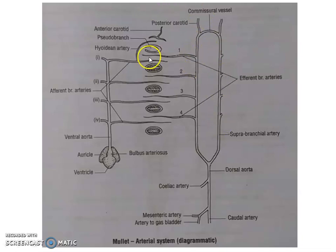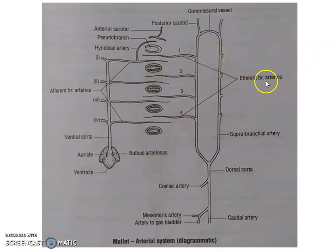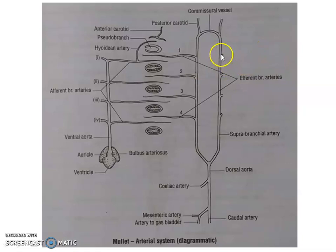Now passing on to the efferent branchial system. The efferent branchial system starts from the gills and moves to various parts of the body. Oxygenated blood from the gills is collected by four pairs of efferent branchial arteries from either side. On each side the four efferent branchial arteries join together to form the suprabranchial artery, giving a left and a right suprabranchial artery.